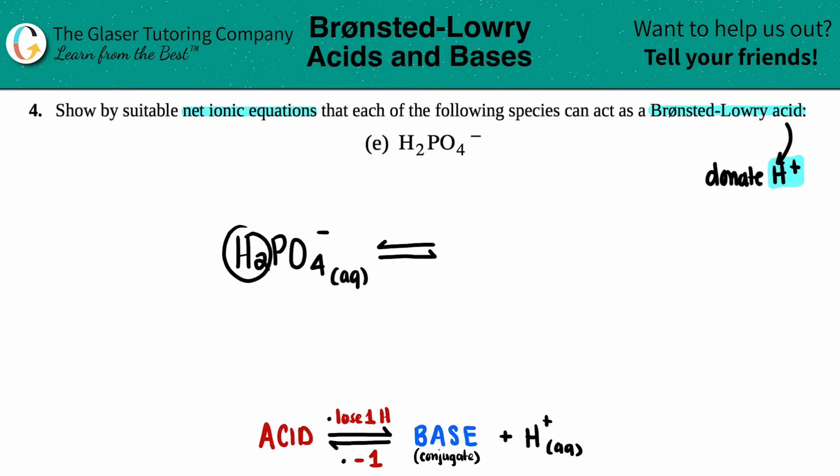And since acids will donate a hydrogen, that's the hydrogen that you see by itself. So if you see an H+ on the product side, that means that this acid gave up one of its hydrogens.